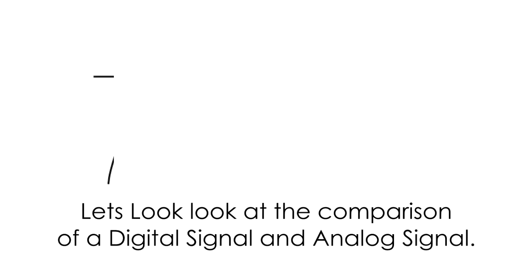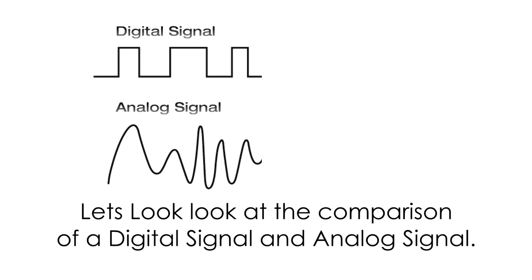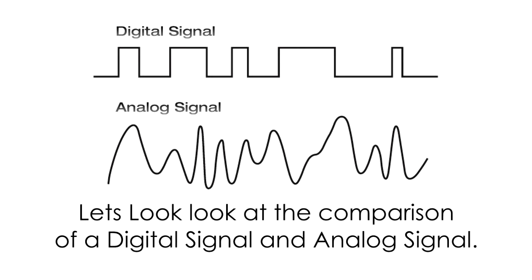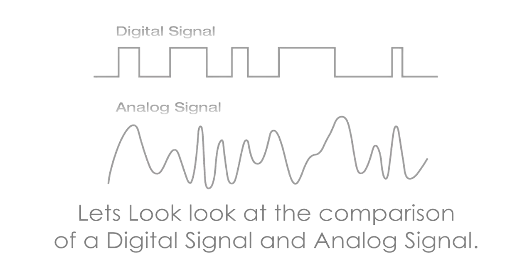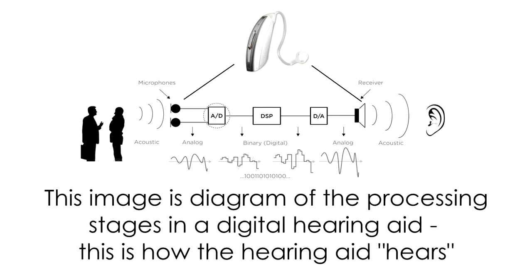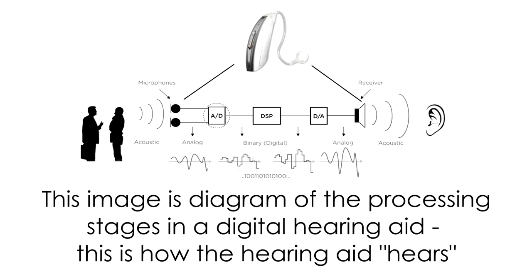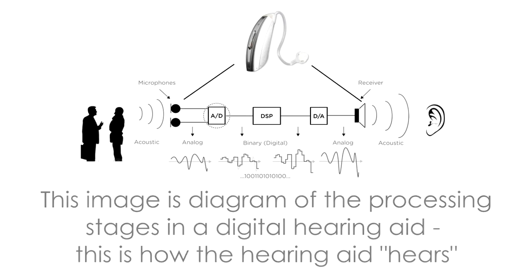Let's look at the comparison of a digital signal and an analog signal. This image is a diagram of the processing stages of a digital hearing aid. This is how a hearing aid hears.